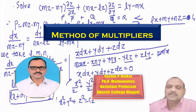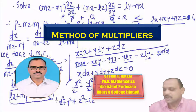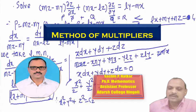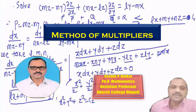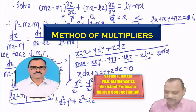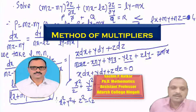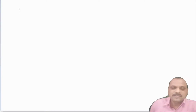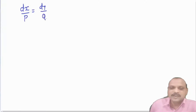Hello friends. In this video we discuss about the method of multipliers. In the video of Lagrange's equations we have seen how we have auxiliary equations and from auxiliary equations how we can find a solution of the differential equations. The auxiliary equations are dx/P = dy/Q = dz/R.